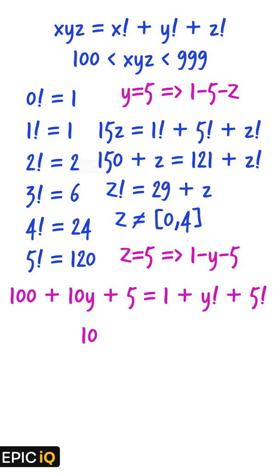This gives us 10y minus y factorial equal to 16. A value of 4 for y satisfies this equation. So, the number xyz will be 145.